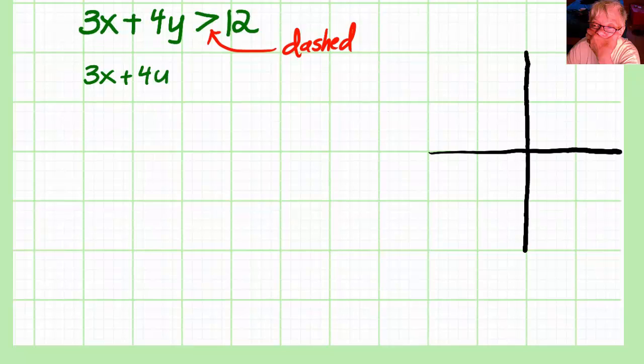So first I graph 3x plus 4y equals 12 because that will give me the line. I find two points on the line. Use any method you want, but with a standard form equation of a line, usually just getting the intercepts is easier. Not always, but most of the time.